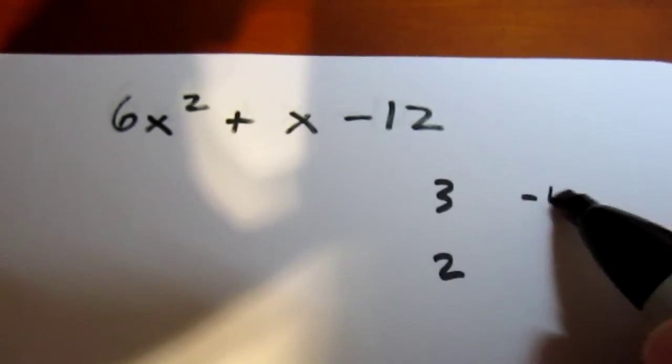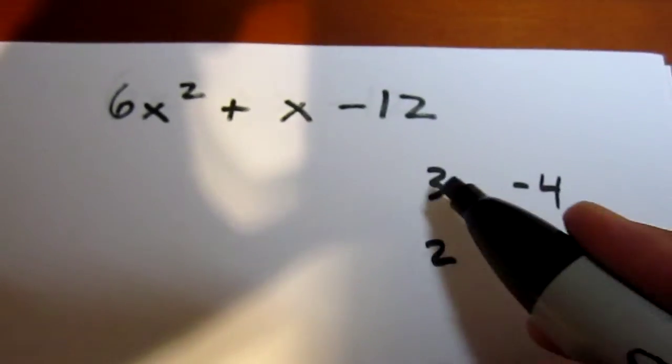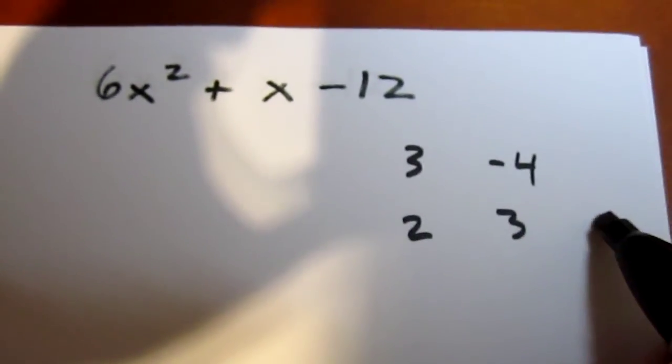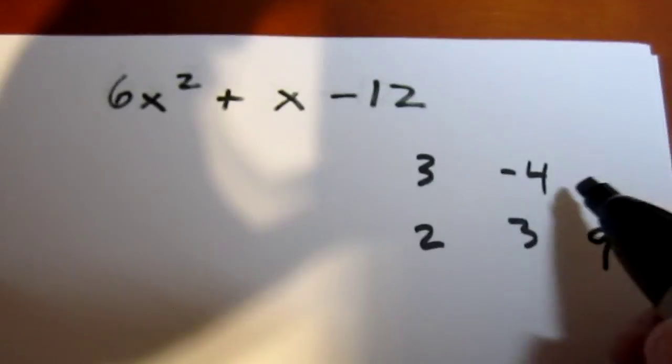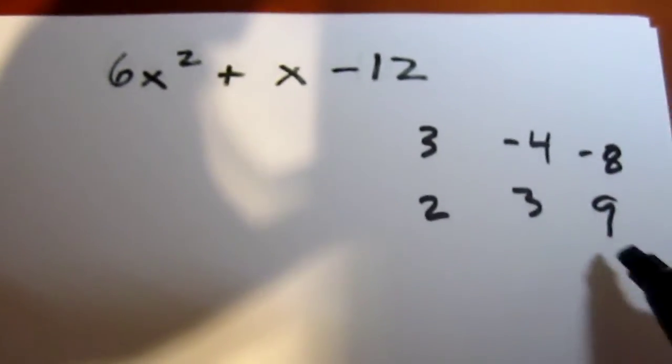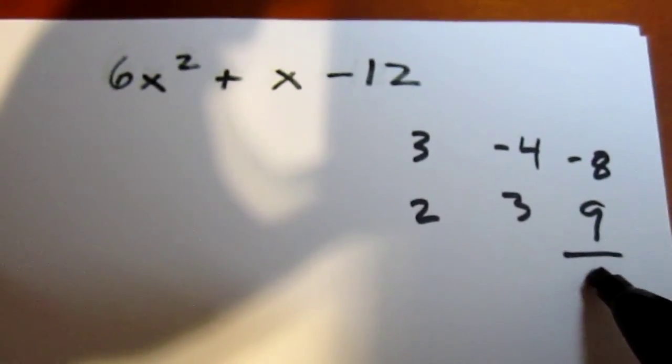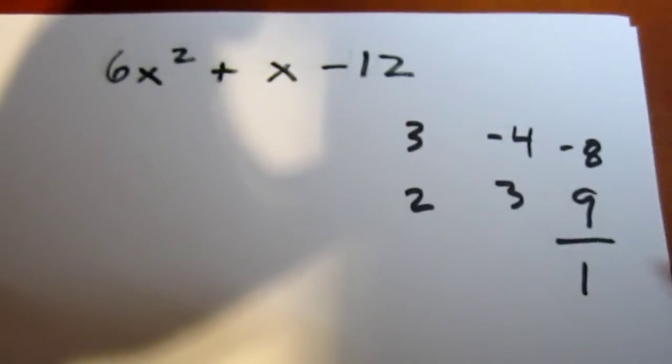So if we try negative 4 and positive 3, 3 times 3 is 9. 2 times negative 4 is negative 8. And when I add these together, I actually get plus 1. I got it right on my first try.